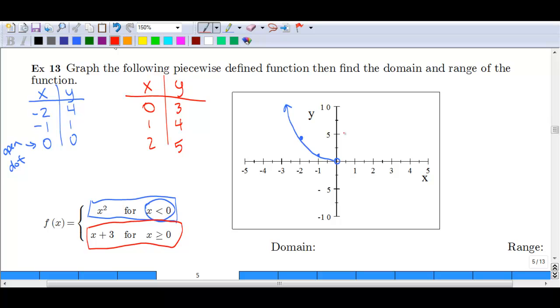Again, if you plot those points at 0, we're at 3. And this time, it is a closed dot because we've got x is less than or equal to 0. At 1, we are at 4. And at 2, we are at 5.